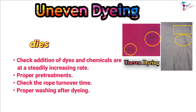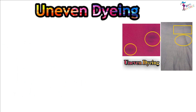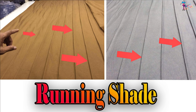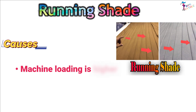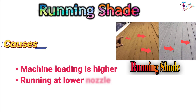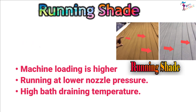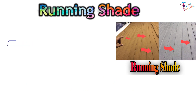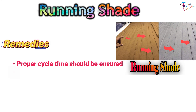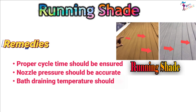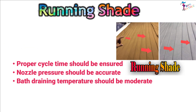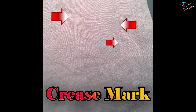Proper washing after dyeing. Running Shade. Causes: Machine loading is higher, running at lower nozzle pressure, high bath draining temperature. Remedies: Proper cycle time should be ensured, nozzle pressure should be accurate, and bath draining temperature should be moderate.